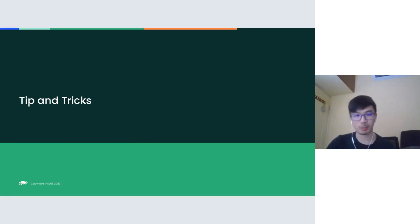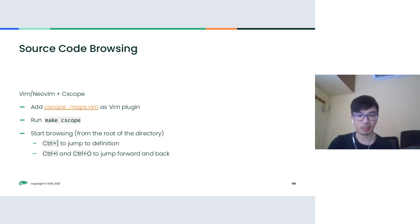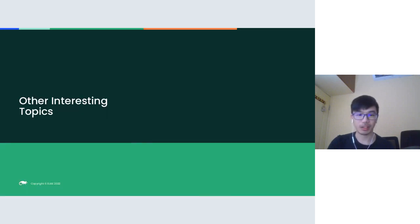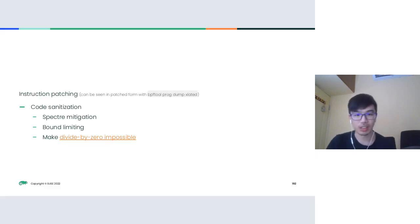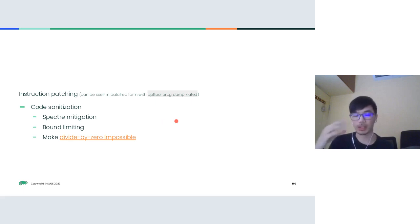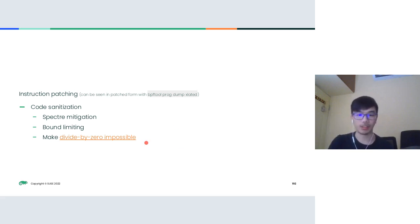That's the main content of my talk. The following are some tips and tricks. One interesting thing worth mentioning: even though it's called a verifier, the BPF verifier also does instruction patching — it changes the loaded program. This is mainly for code sanitization: either Spectre mitigation or bound limiting, where the verifier inserts masking instructions to ensure that when doing an index access the index is really within bounds. It also makes division by zero and modulo by zero impossible, so on x86-64 we don't run into exceptions.